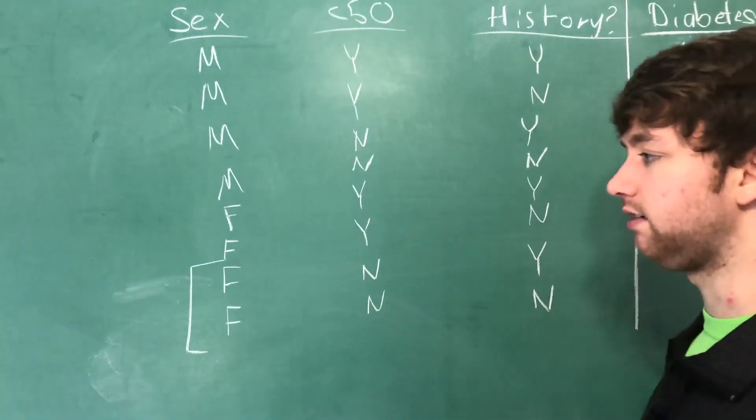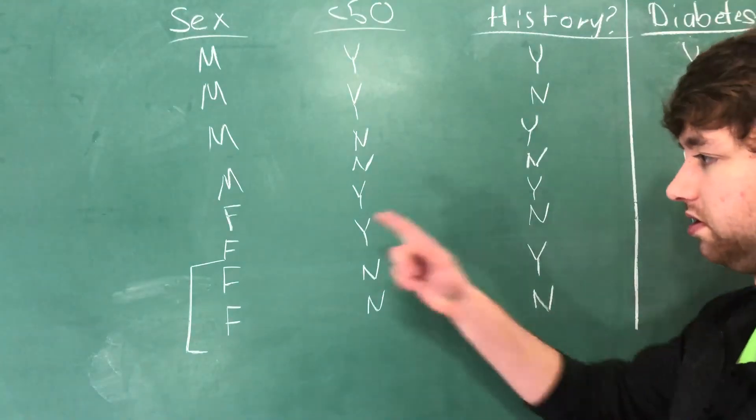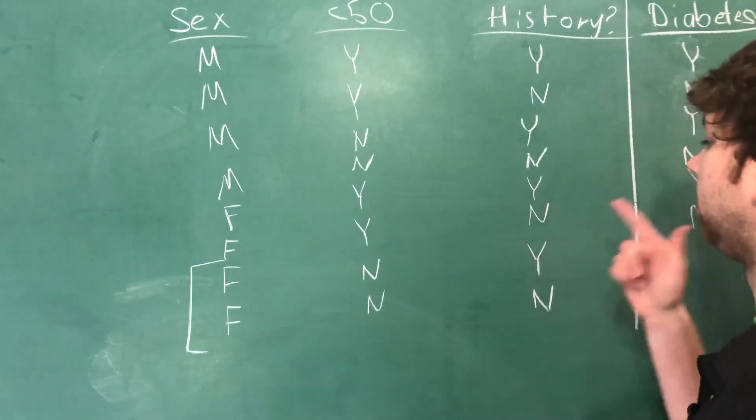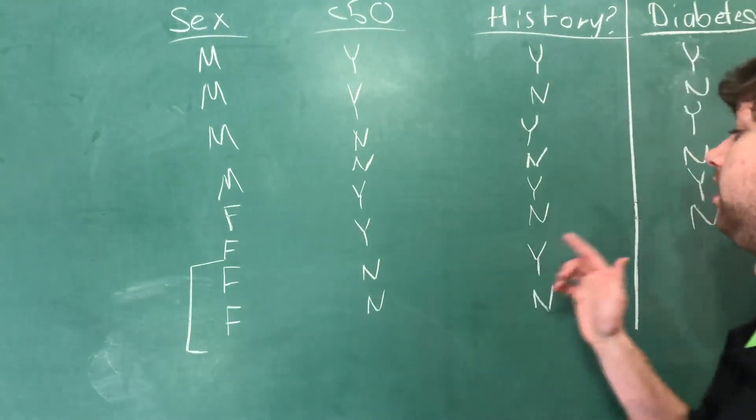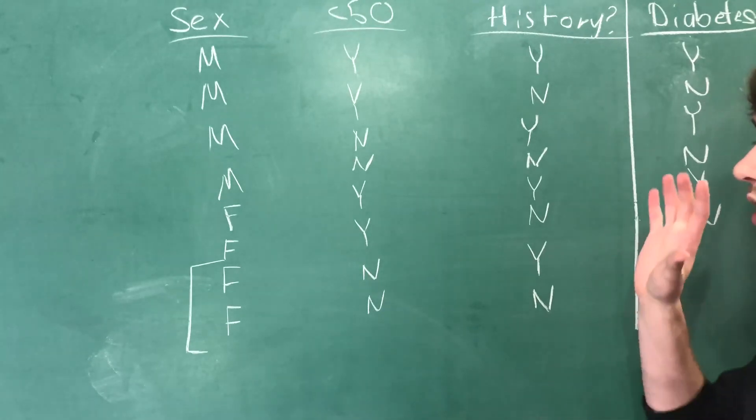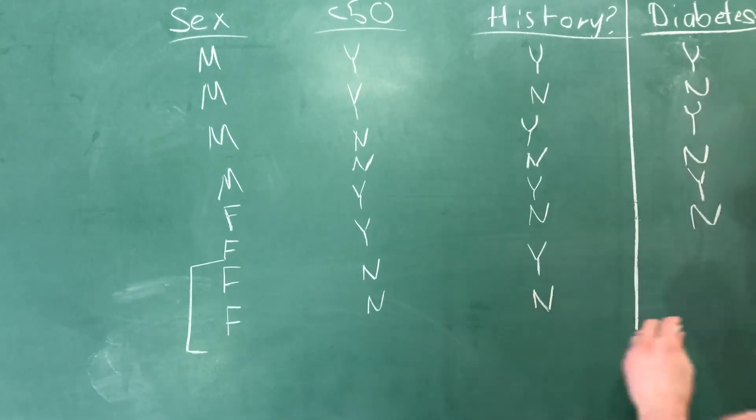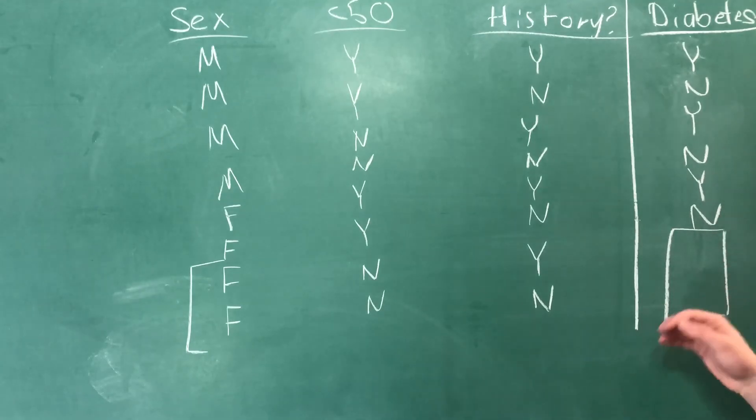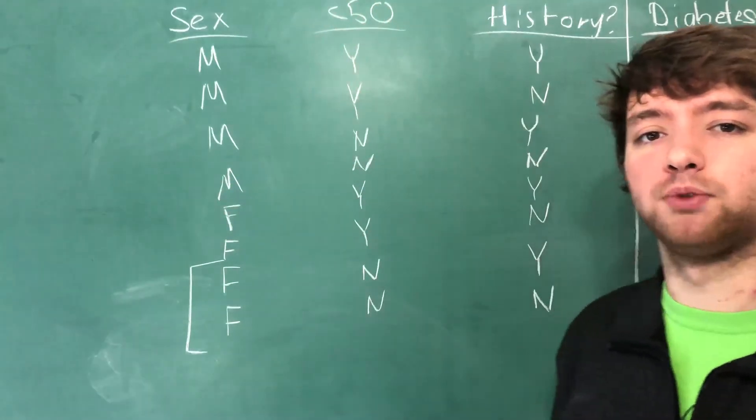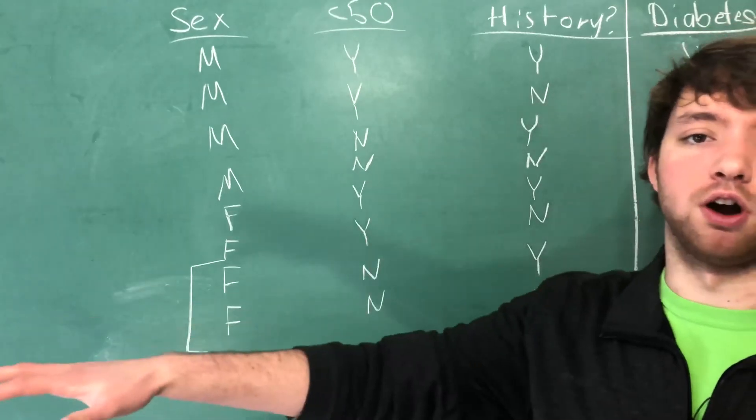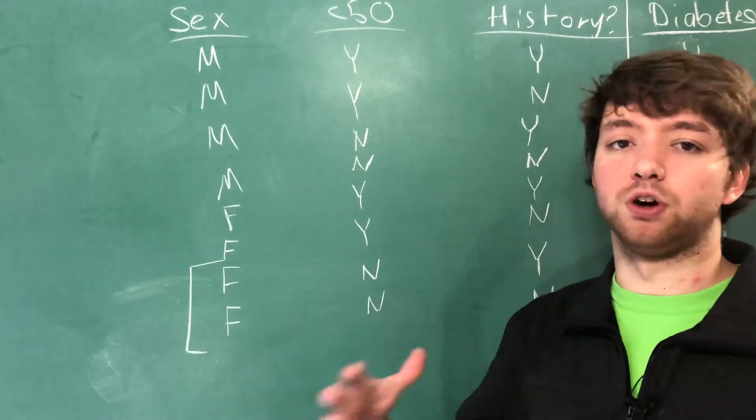We have these two rows where we do not have enough historical data to represent. Because in our historical data, we did not have anybody who was a female who was older than 50 and did have a family history. And we also did not have anybody who was a female and was older than 50 and did not have a family history of diabetes. So our data set is lacking. So we are able to guess the values here most appropriately using the other attributes that are available up here.